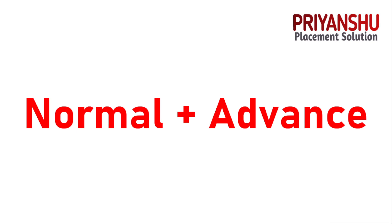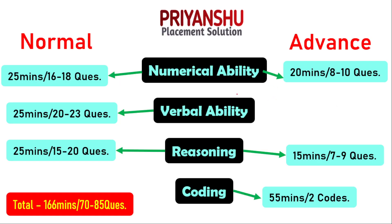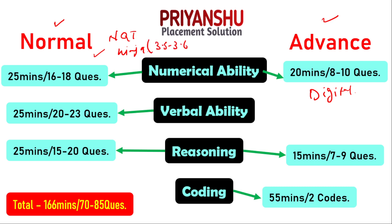Basically, in an upcoming slot you have two sections — the first is Normal and the other one is Advanced. For Normal, this is called Ninja, and for Advanced it's called Digital. For Ninja you will get approximately 3.5 to 3.6 LPA, and for Digital you will get approximately 7 LPA.